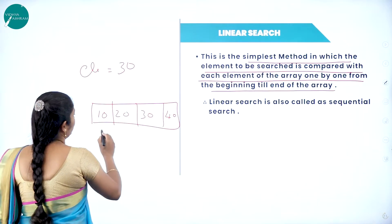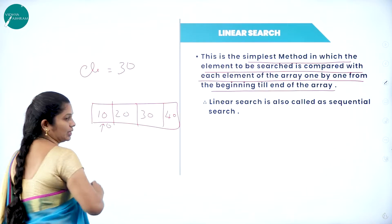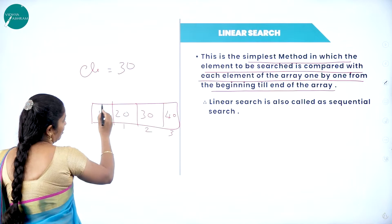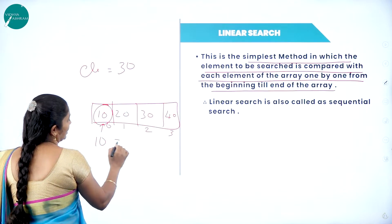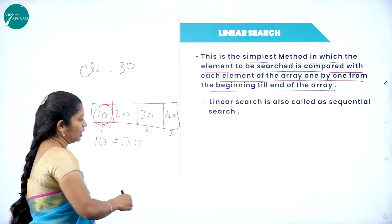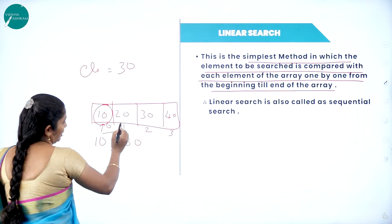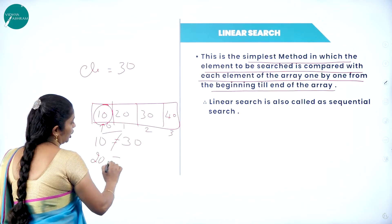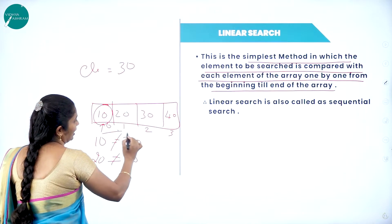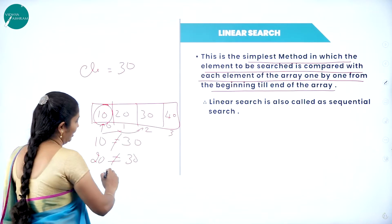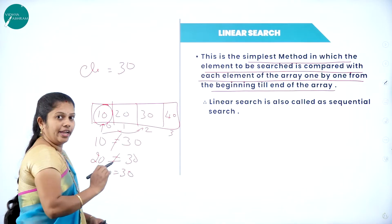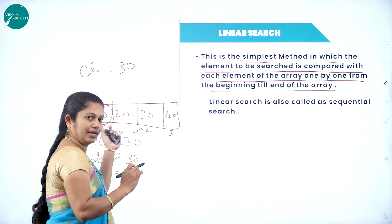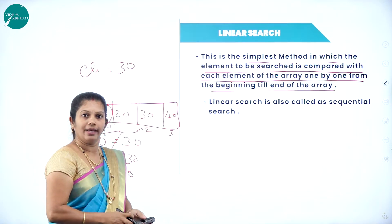First, I will search the first element at position 0. I compare the first element 10 with the search element. If it does not match, it moves to the next element. At position 1, we have 20 — that is not equal to 30. Once again it searches the next element. Then 30 equals 30 — the searching process takes place from the beginning, one by one, till the end.